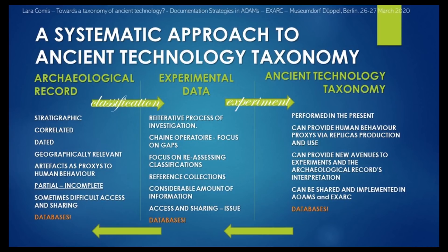The archaeological record is the starting point for all the work done in experimental archaeology and in open-air archaeological museums, where most of the ancient technology activities are performed. Experimental archaeology is a research tool used to fill the gaps in the knowledge of the archaeological record, while open archaeological museums communicate that knowledge to the public. Could it be useful to build a database on ancient technology activities and a consequent taxonomy in open archaeological museums?